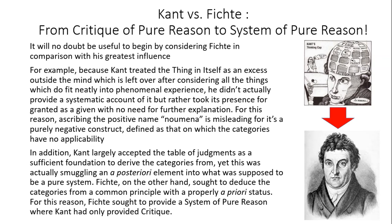For example, Fichte found Kant's treatment of the thing-in-itself to be totally unsatisfactory because Kant basically just tells you that it's the excess which lies outside of the mind — whatever is left over after you've considered all of the things which fit neatly within phenomenal experience. Kant did not actually provide a properly systematic account of the thing-in-itself, but rather just took its presence for granted.